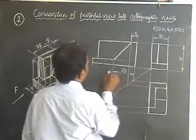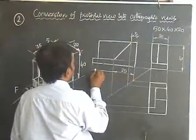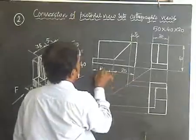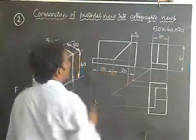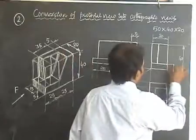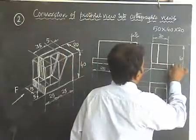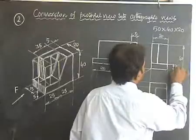This can be marked as 25, 25. The height can be marked as 5, the remainder is 35. So 5 plus 35 is 40.